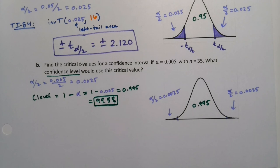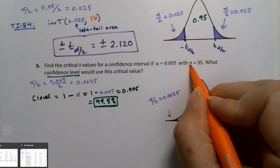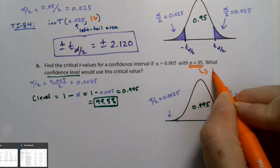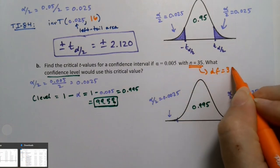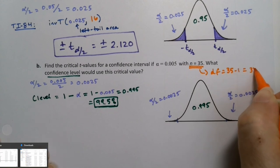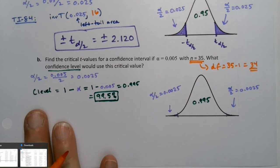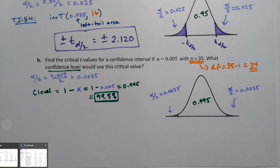So I'll use StatCrunch first because StatCrunch is so easy. One other thing, I will need degrees of freedom before I go off on my merry way. I'm going to need degrees of freedom, which is 35 take away 1, which is 34. So that's my degrees of freedom because StatCrunch is going to ask me for that first thing.